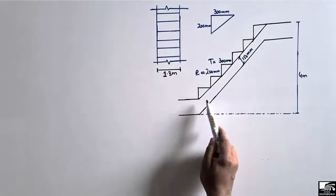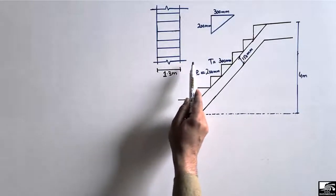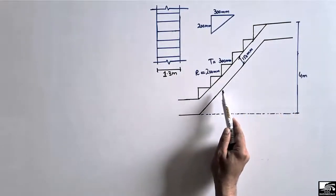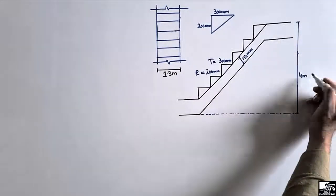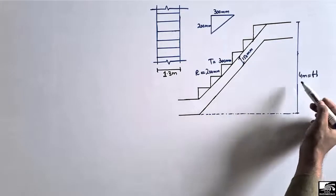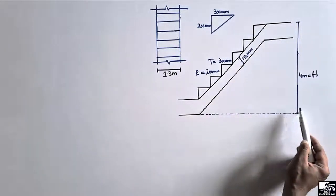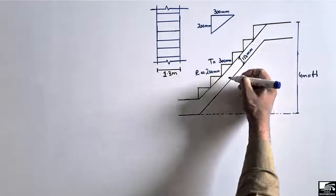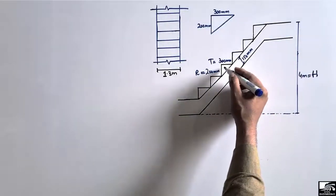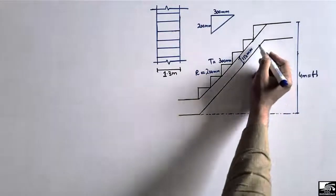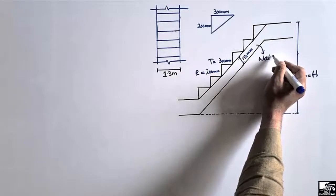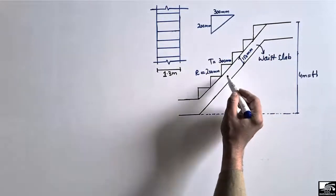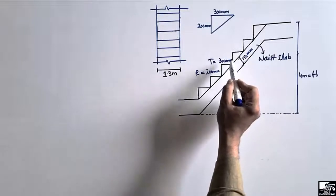This is the side view of the staircase, while this is the top view. The width of the staircase is 1.3 meters, and the other dimensions are given. The general height H from the top of the staircase to the bottom ground is 4 meters. The staircase has two main parts: the waist slab, and on top of the waist slab we have the steps.